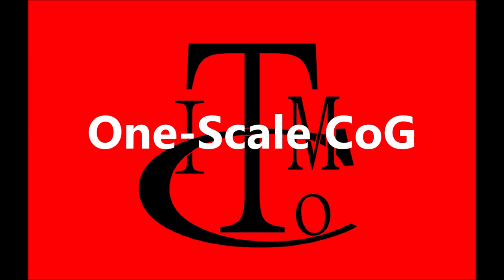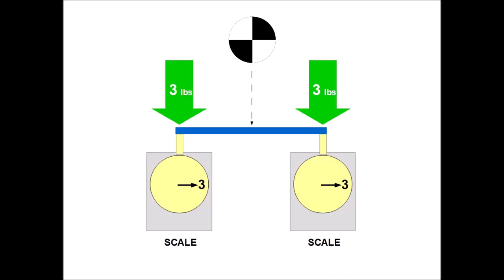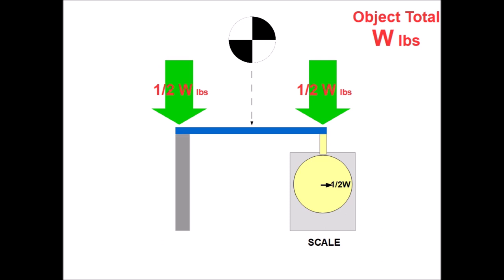But you can also find the center of gravity just using one scale. In our design example, we had each side having three pounds of weight for a total object weight of six pounds. When balanced, we'll always have one half of the total weight on both sides. Therefore,